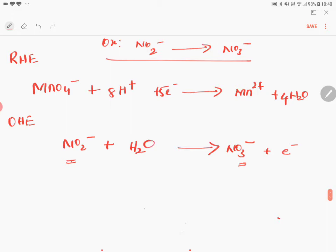Oxygen is balanced. Now come to hydrogen. Hydrogen is not balanced. So here 2 hydrogens are there. So put 2 H plus here. That is all. 2 H plus.